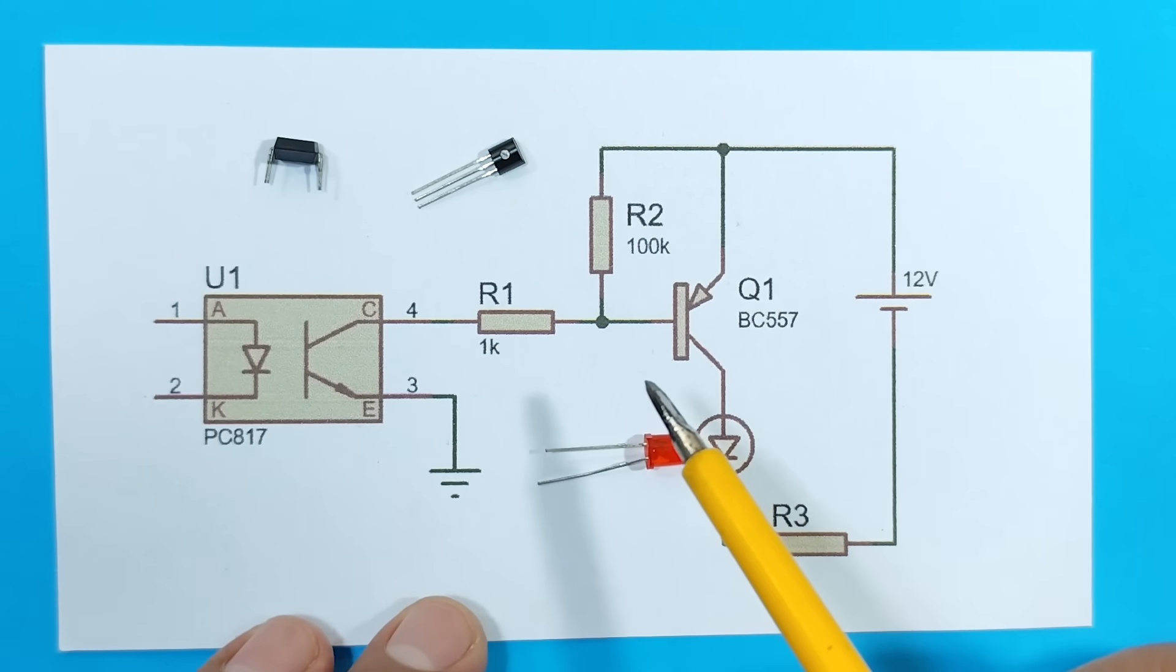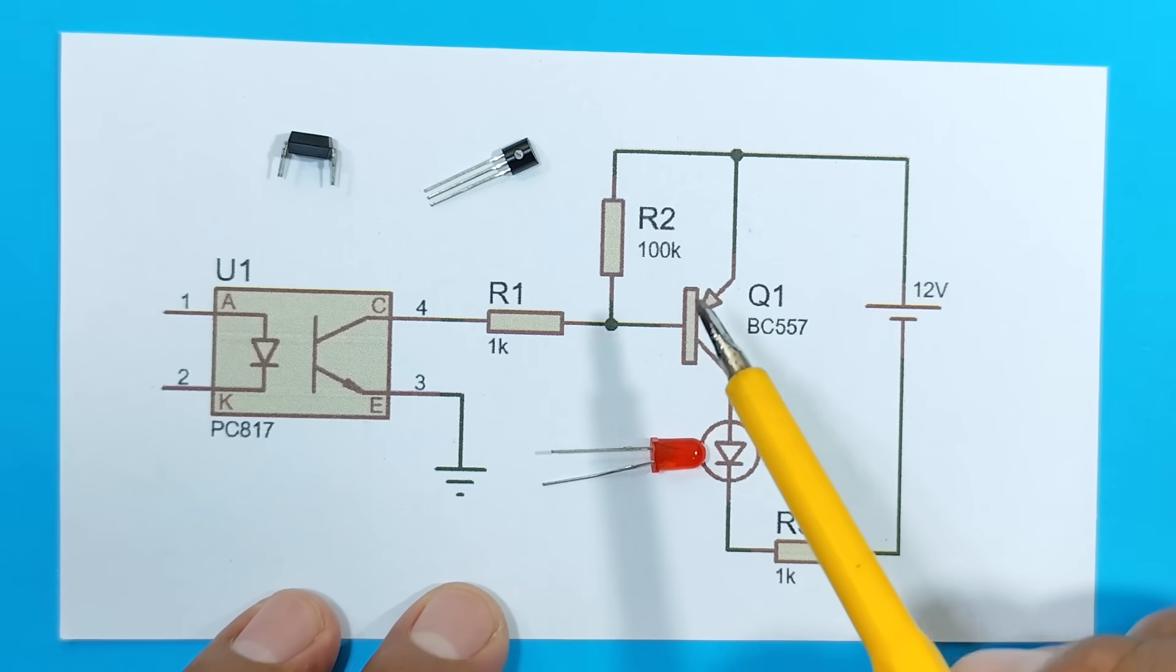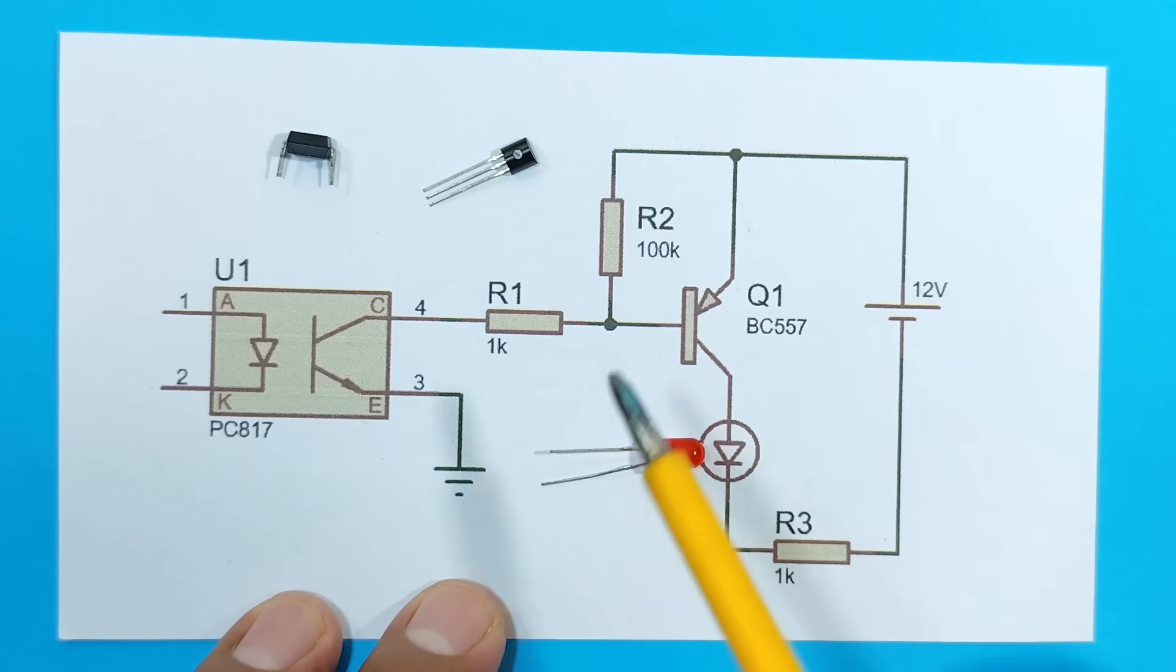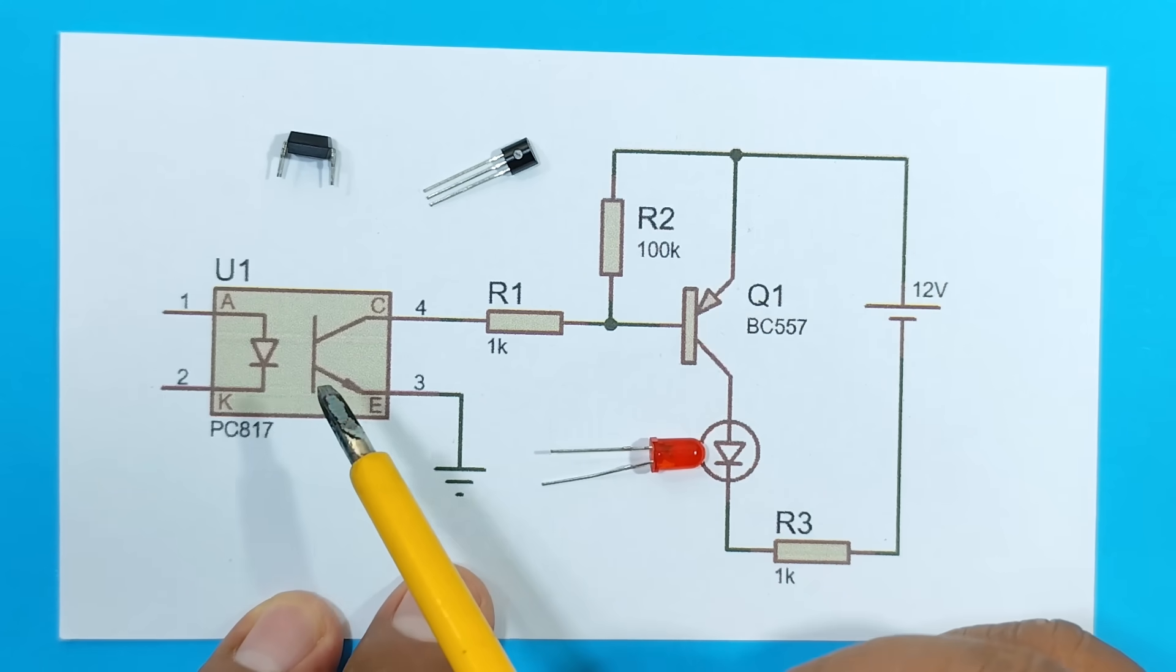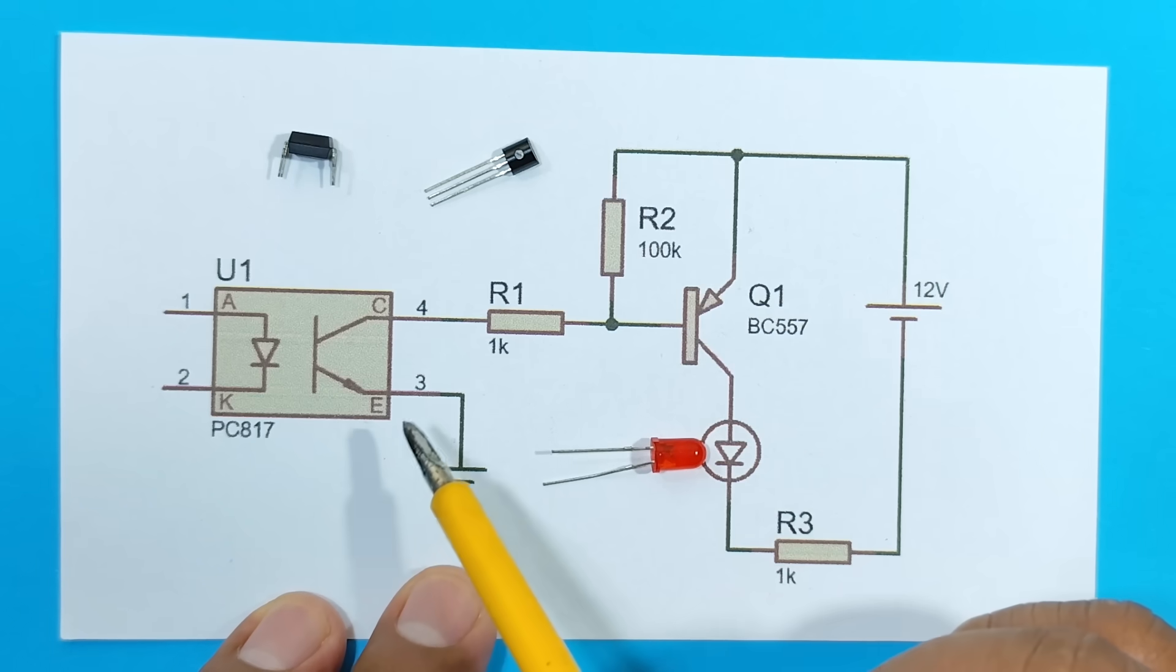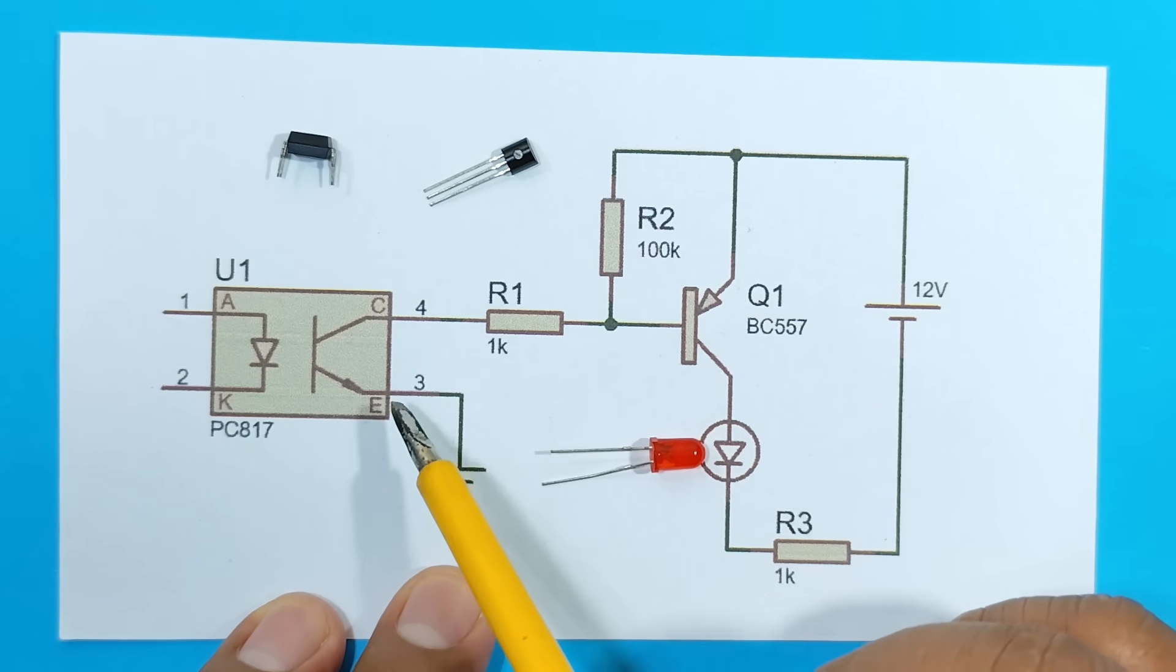Alright, now we're going to explain how this circuit works, which will allow us to observe the signal that the optotransistor delivers. Remember that between the collector and emitter of the optotransistor, there is a variation in resistance depending on the light that falls on its base.